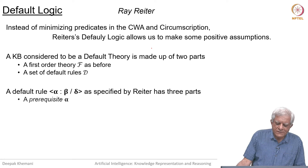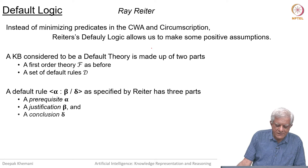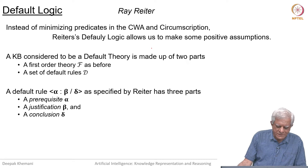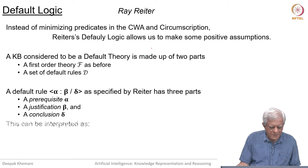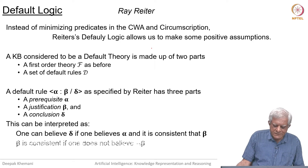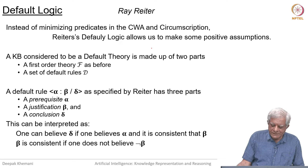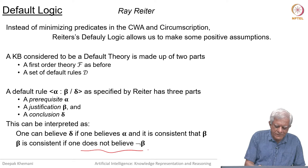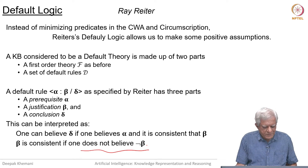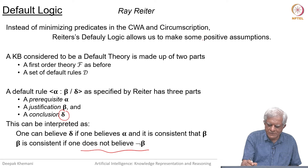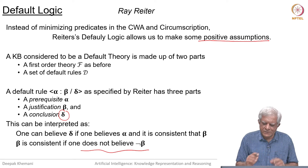A default rule has three constituents: a prerequisite alpha, a justification beta, and a conclusion delta — also known as an assumption. We can believe delta if one believes alpha and it is consistent that beta. What we mean by 'consistent that beta' is that one does not believe the negation of beta. This delta is essentially the positive assumption we are allowed to make under certain conditions.